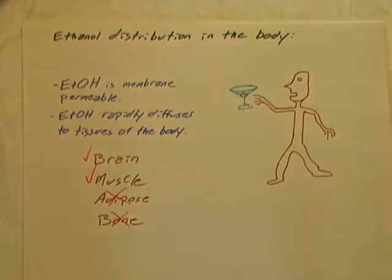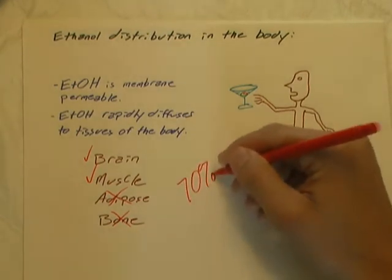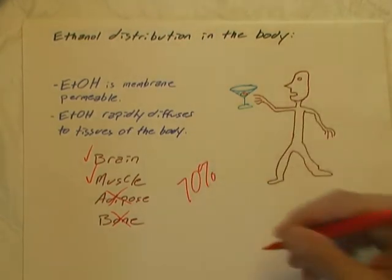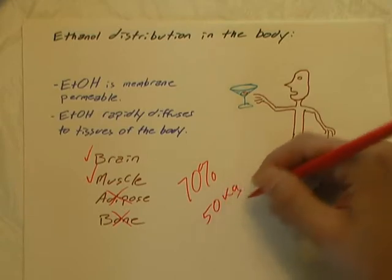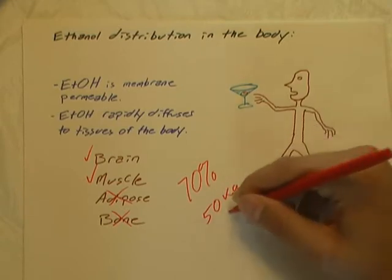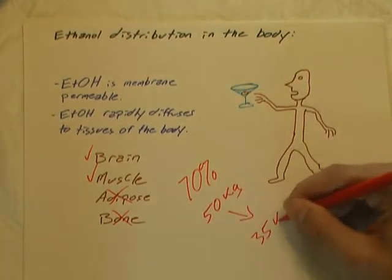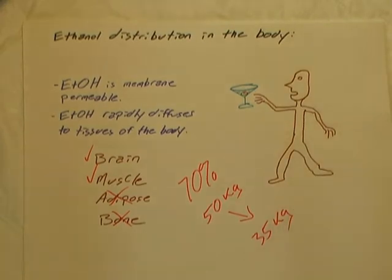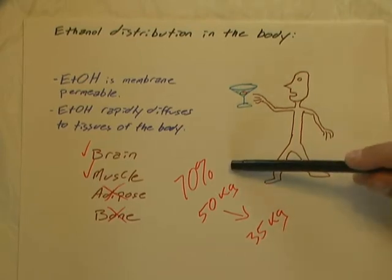On average, the amount of a person's body mass that is accessible to ethanol is about 70%. So for example, if a person weighs 50 kilograms, then about 35 of those kilograms would be accessible for ethanol. So this 70% is on average.